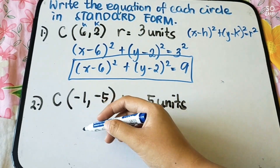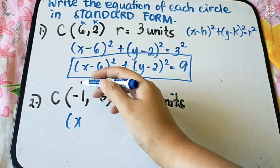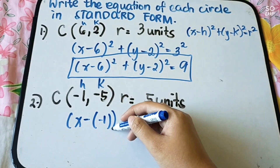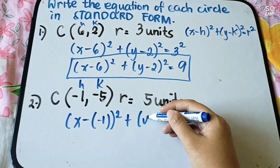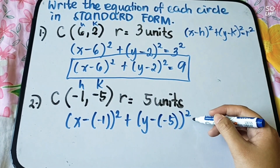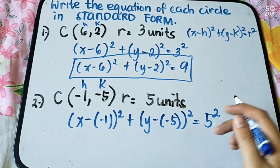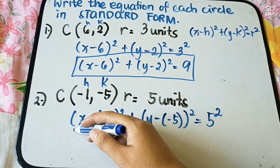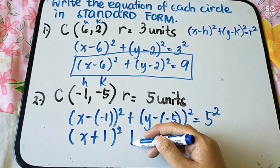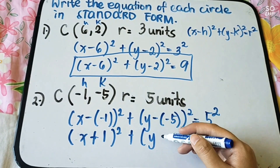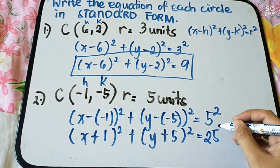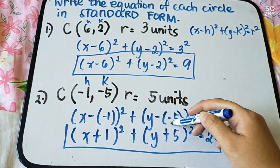Second example: center is (negative 1, negative 5) and r equals 5. Substituting: x minus (negative 1) squared plus y minus (negative 5) squared equals 5 squared. Simplifying the double negatives: (x plus 1) squared plus (y plus 5) squared equals 25. This is your standard form.